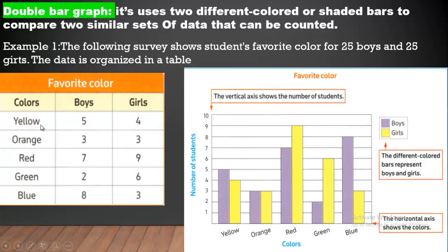Who likes yellow? From boys 5 and girls 4. We will represent boys by purple, like this, 5 and girls 4 by yellow. And orange, 3 and 3, so equal by purple and yellow, and so on. This is a shape called a double bar graph.